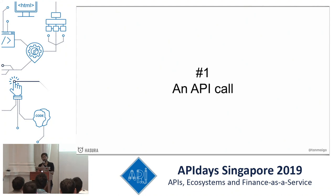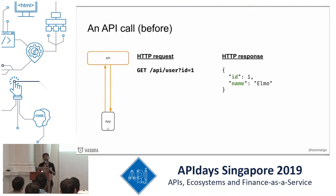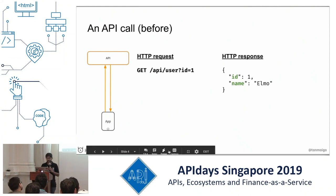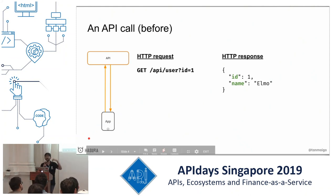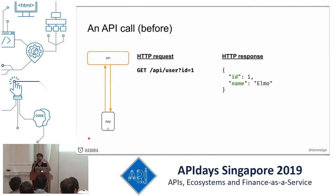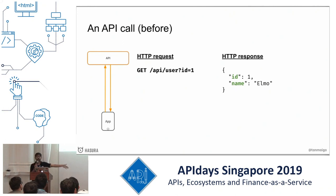Let's look at an API call. Let's say we're building a user profile page. We're building an app, a mobile or a web app, and that's making a request to an API. If we're building a user profile page, we need to make an API call to fetch user profile data — GET /api/user, parameterized ID equals one — and then you get a JSON response that you render in your app.